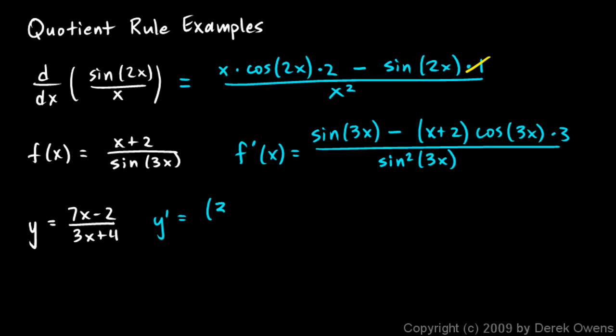Well, it's going to be low, that's 3x plus 4, times d high, and the derivative of that is just 7, minus high, 7x minus 2, times d low. And the derivative of what's down low is just 3. All that over 3x plus 4 squared.